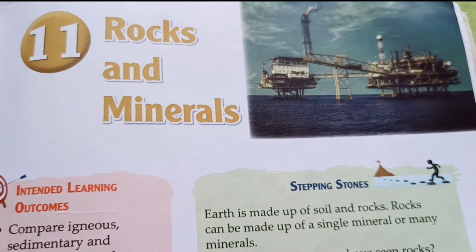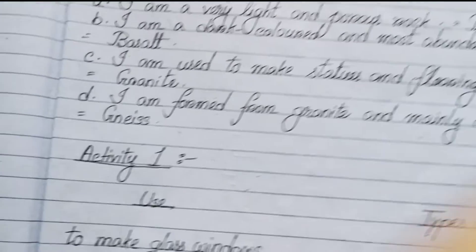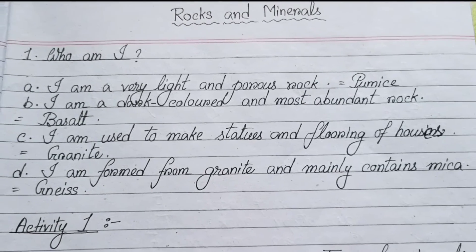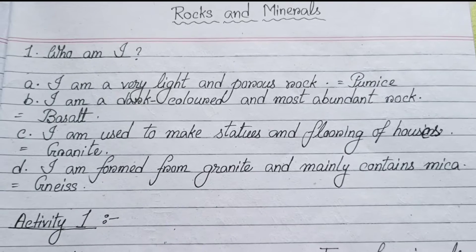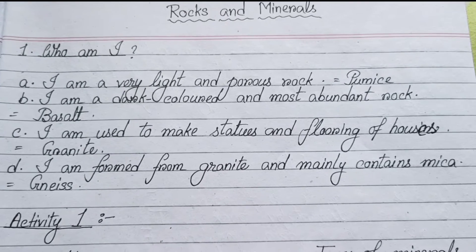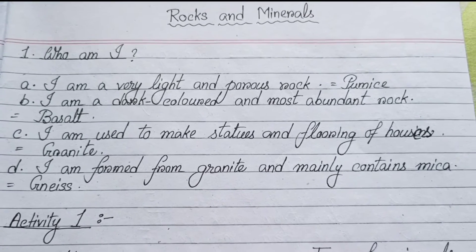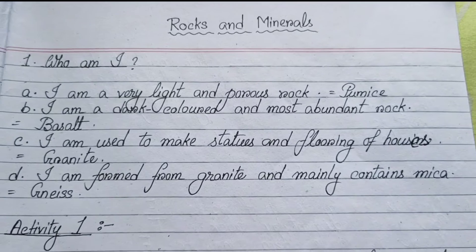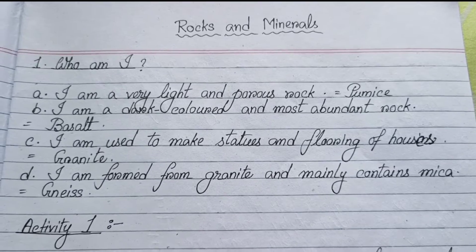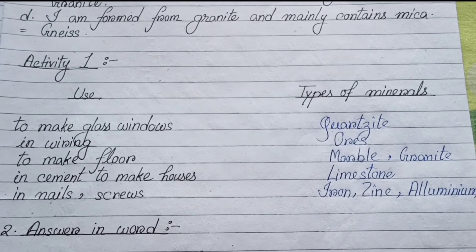Rocks and Minerals. First we have some objective type questions. Number one: Who am I? (a) I am a very light and porous rock — Pumice. (b) I am a dark colored and most abundant rock — Basalt. (c) I am used to make statues and flooring of houses — Granite. (d) I am formed from granite and mainly contains mica — Gneiss.